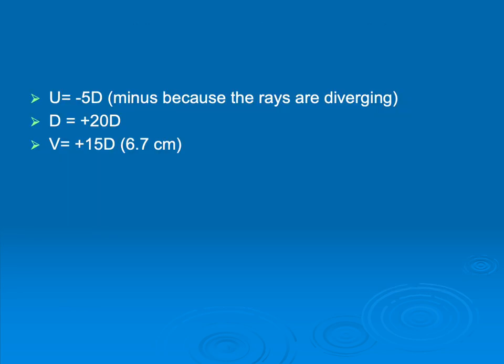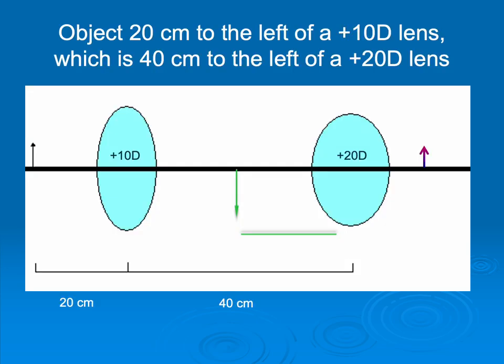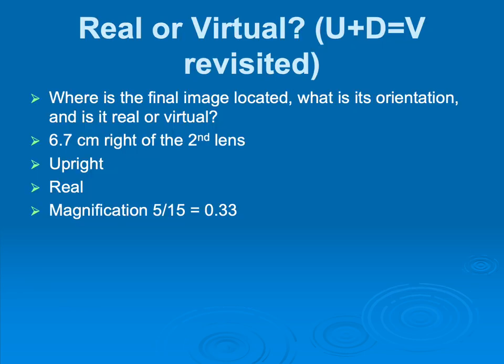Now I can do u plus d equal v again. And once again, u is minus 5, because that's the distance from my intermediate image to my plus 20. And then I've got plus 20, and I can calculate that v is a plus 15 diopters, and I divide 100 by 15, and I get 6.7 centimeters. So now I can see, I add it to my diagram here, where that image is going to be. So now I have an intermediate image in the green. I have a final image in that, I don't know what color that is. Is that magenta? It's the thing that's somewhere between red and purple, that arrow there.